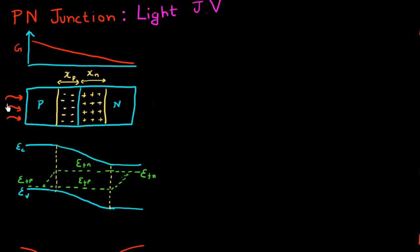Let's consider the case where sunlight is shining from the p-side direction. These photons will get absorbed inside the P and N regions, and they'll essentially result in the creation of electron-hole pairs. This can be represented by a generation rate which decreases as the light traverses through the PN junction and gets absorbed.